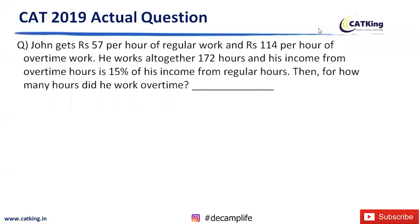John gets rupees 57 per hour of regular work and rupees 114 per hour of overtime work. He works altogether 172 hours, and his income from overtime is 15% of his income from regular hours. Then how many hours did he work overtime?